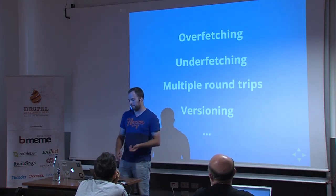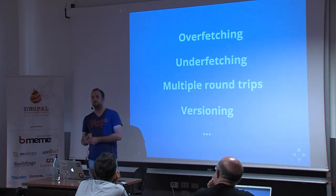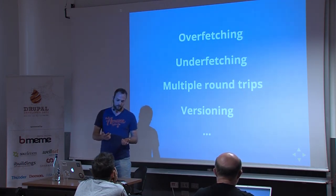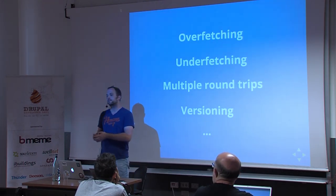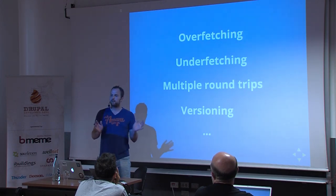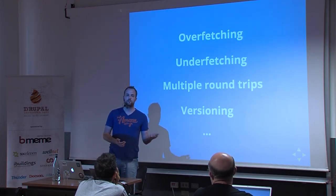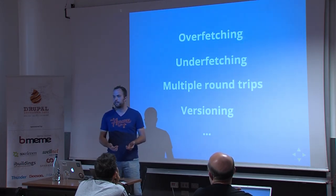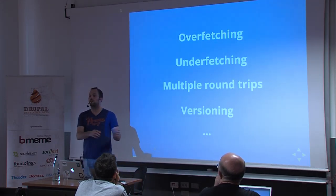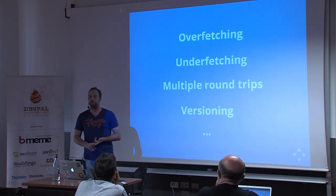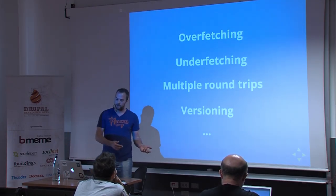Underfetching is the problem of breaking API changes. For example, you want to call a resource and fetch the title and the body field. But then at some point the backend developer decides to remove the title field and one of your applications breaks. This is a very real problem especially when dealing with multiple different types of applications on the same backend — Android developers changing something specifically for Android, breaking the iOS application.